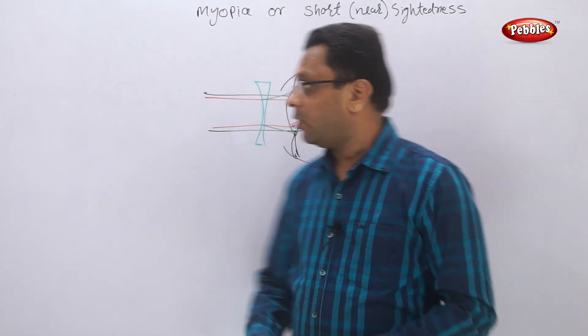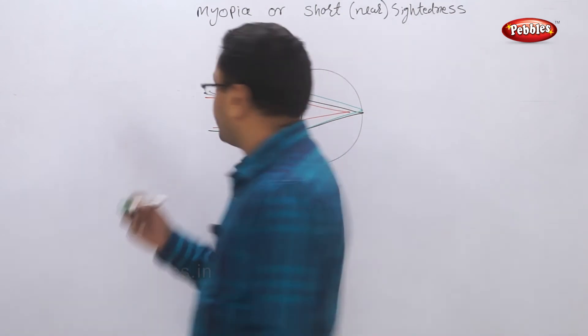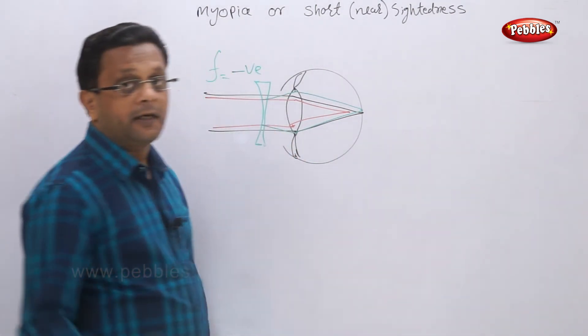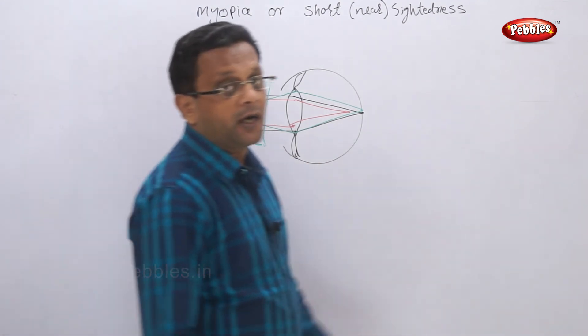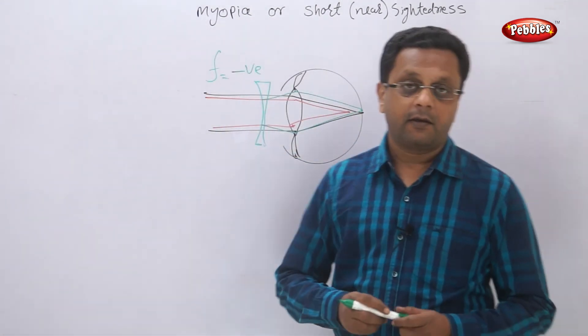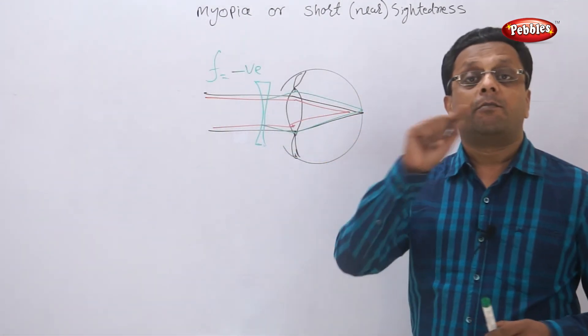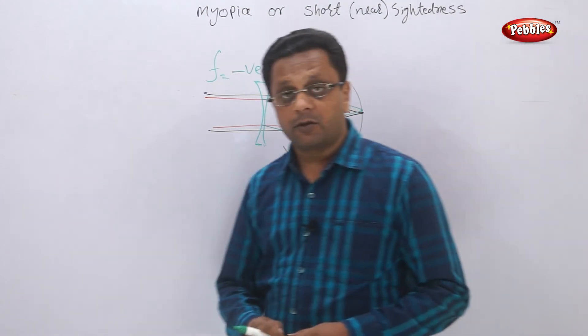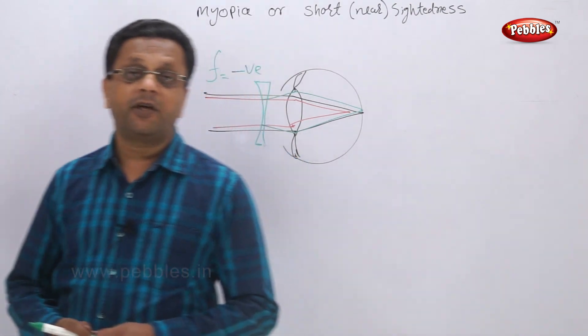Now the focal length of the concave lens is negative. And that is why people who are having the myopic eye use spectacles of minus number. And you must have observed that minus number spectacles are very common.